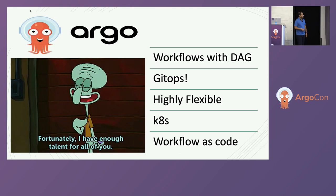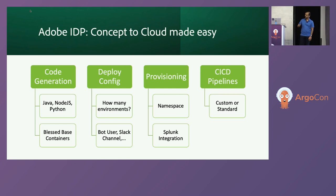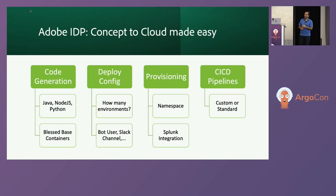Let me jump into what exactly happens with Adobe IDP before I show you the solutions. Adobe IDP is the Adobe Internal Developer Platform. Any developer at Adobe can come in with a concept. We have a Portal which will help you generate code. We have different flavors — starters like Java, Node.js, and Python. We also have blessed base containers, which are secure Adobe-vetted containers that every application at Adobe uses.